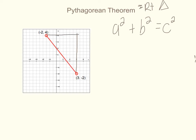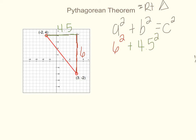Now I just need to count the spaces. Each box is only a half, so we have to count by halves. Going up: one, two, three, four, five, six — so my a is going to be six, so I'm going to do six squared. Now looking at b: one, two, three, four and a half — so my b is four point five, and that's going to be plus four point five squared, and that's going to equal c squared.